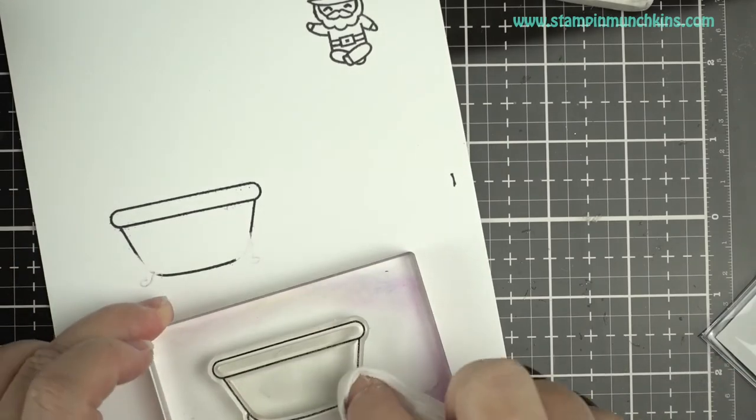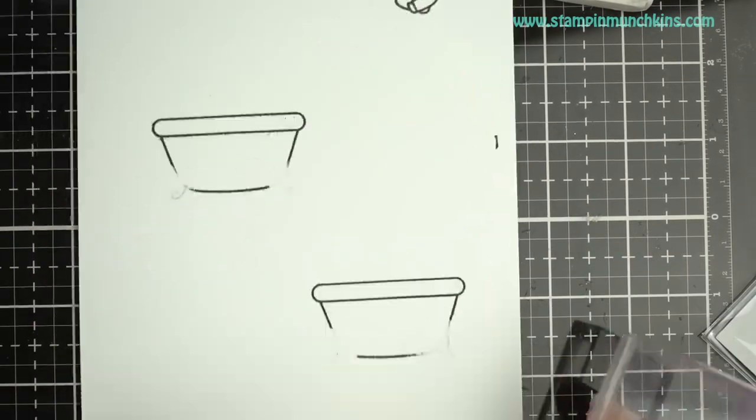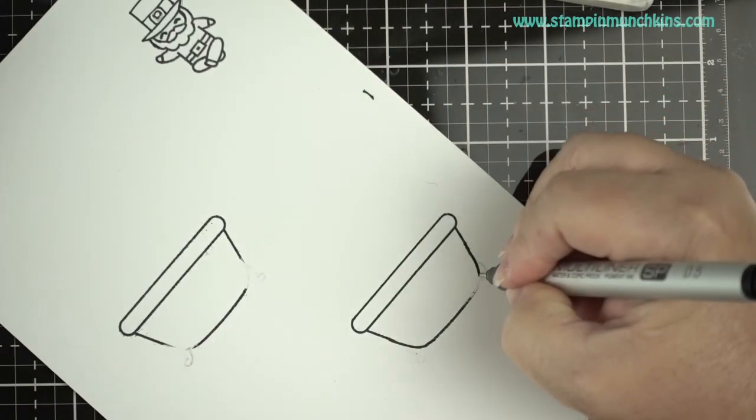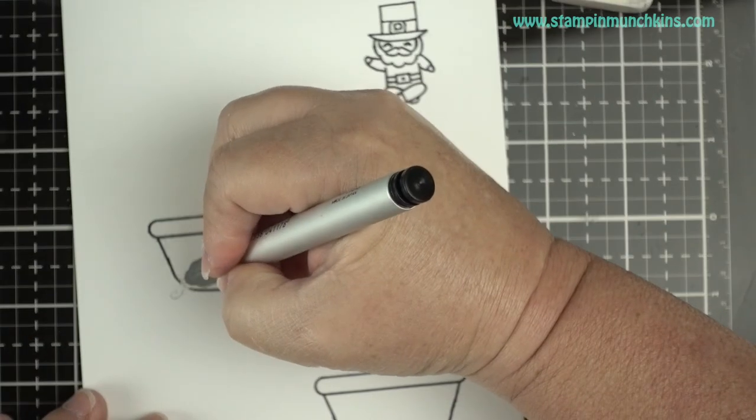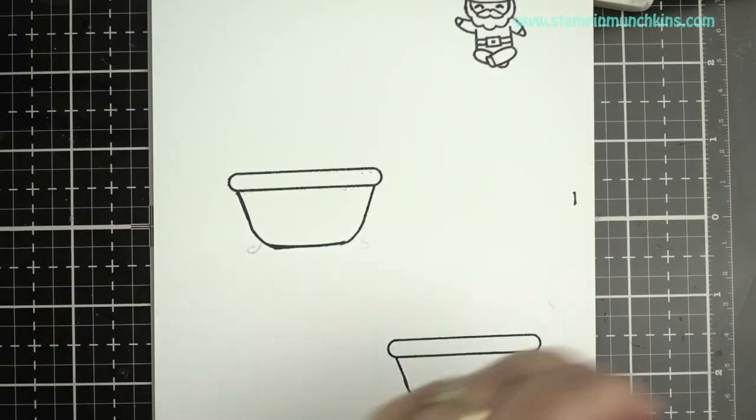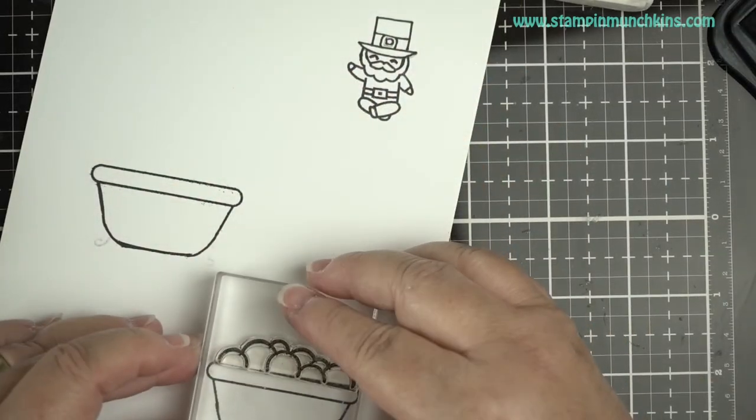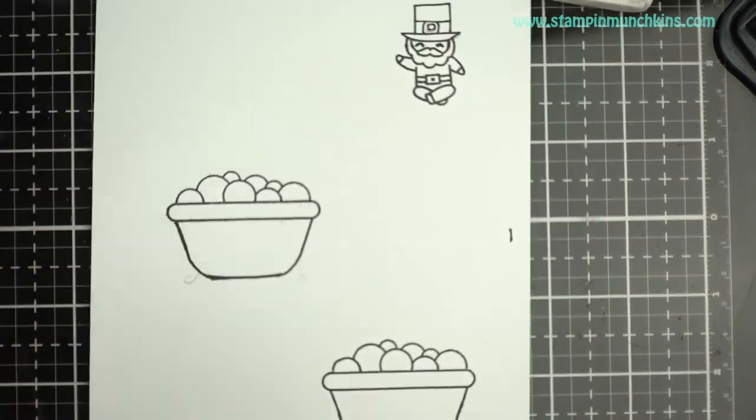And I wanted a cauldron or a pot of gold, and I'm using this Rub-a-Dub-Dub bathtub. I'm using the same 0.5 Copic multiliner pen for the leprechaun's hat, and I'm just putting together the bottom of the pot. The bubbles are going to be my golden coins.